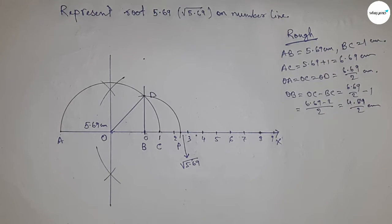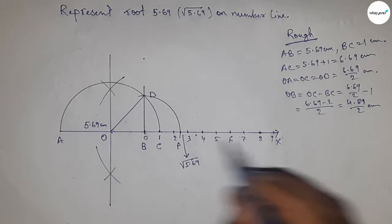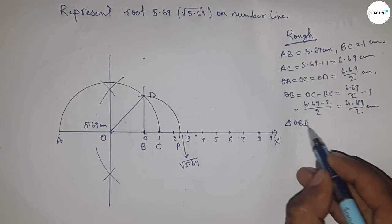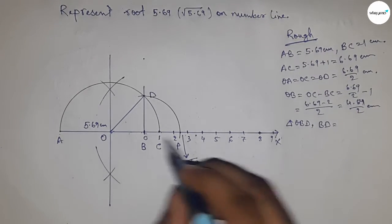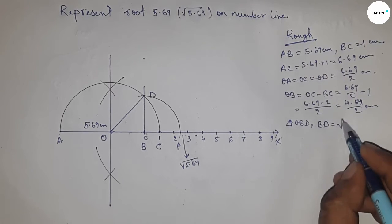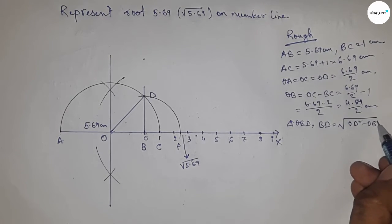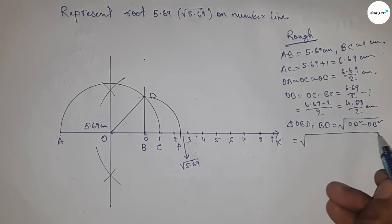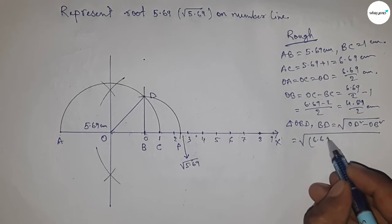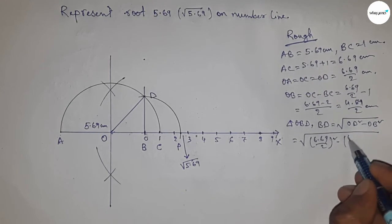Now from right angle triangle OBD we can write BD equal to by Pythagoras theorem OD square minus OB square, that's mean hypotenuse square minus base square.